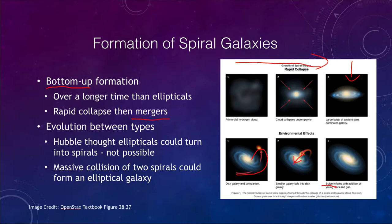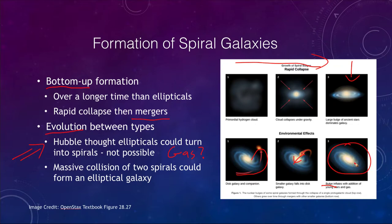This can possibly explain the different classifications of spiral galaxies, which are classified by how large their bulge is — that could tell us something about the number and type of mergers they have gone through. We can also get evolution between types of galaxies. Elliptical galaxies turning into spirals isn't really possible — where would the gas come from? However, a massive collision could take two spirals and form them into an elliptical galaxy, which is what we believe could happen to the Milky Way and Andromeda in a few billion years.